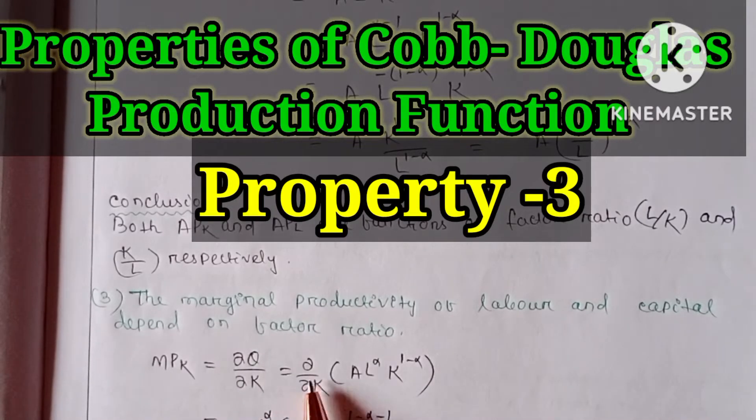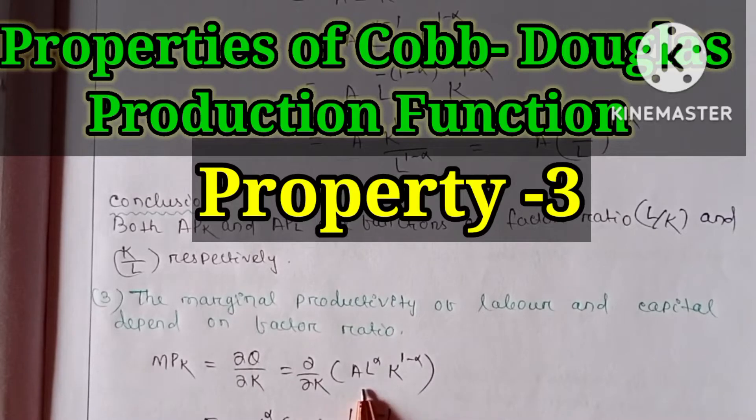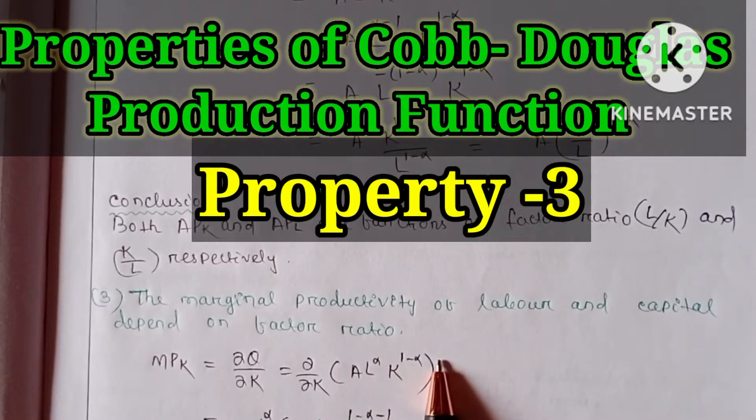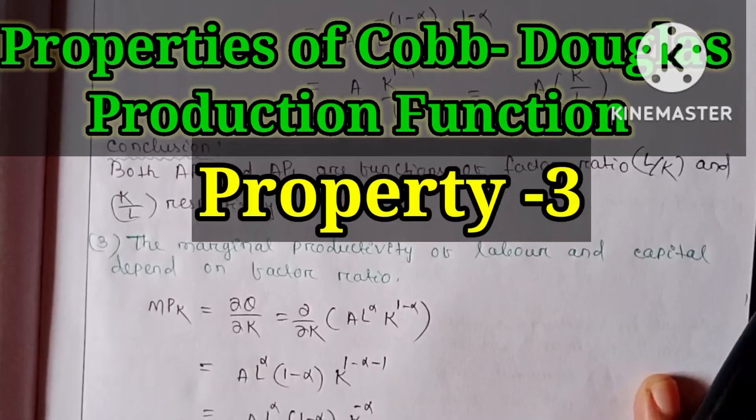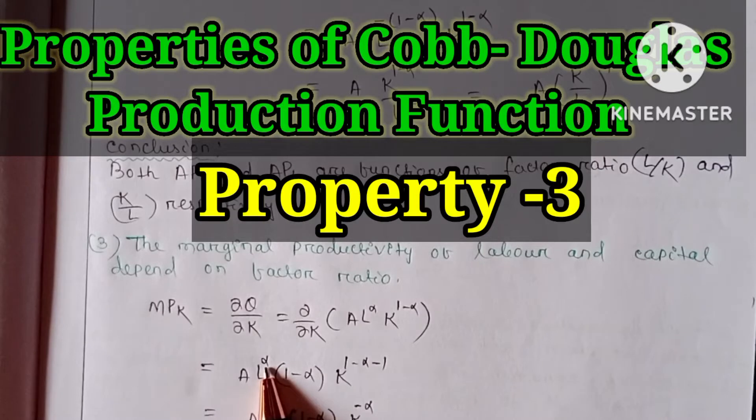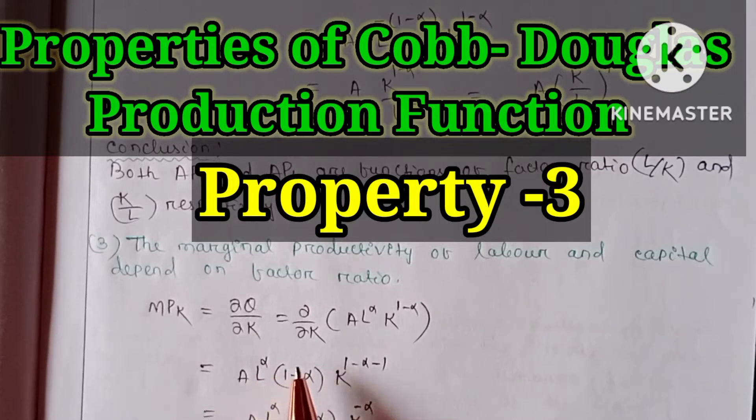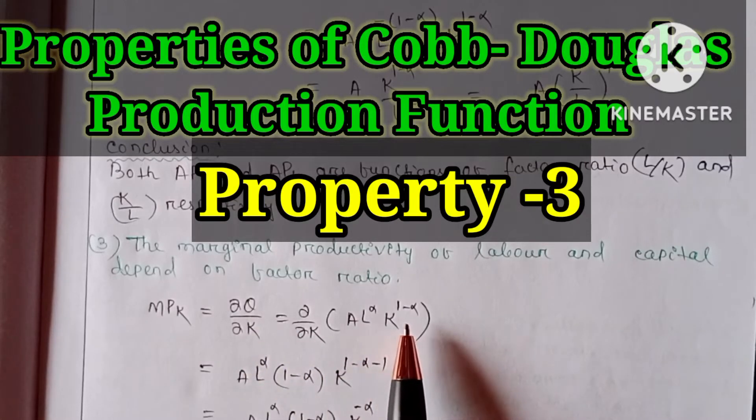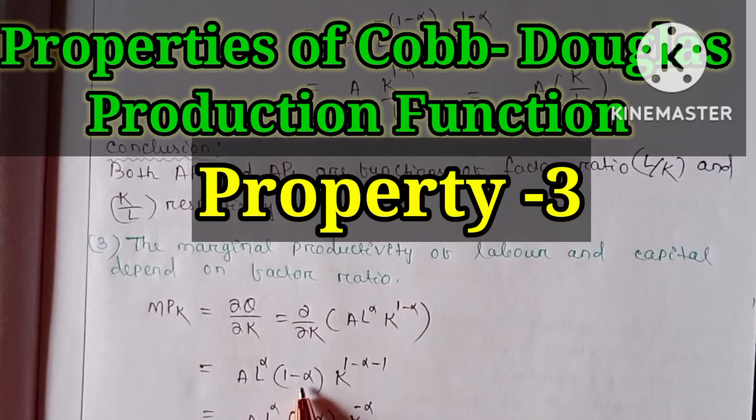This equals δ/δK of Q, which is A·L^α·K^(1-α). This becomes A·L^α. We are calculating the partial derivative of Q with respect to K, so this power is multiplied here and minus 1 is subtracted from the power.